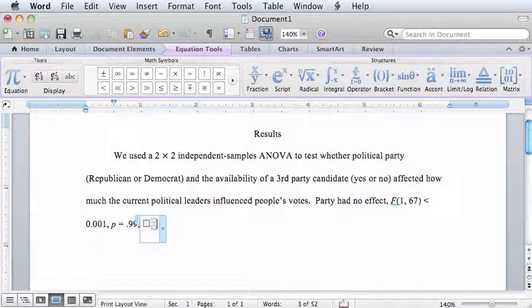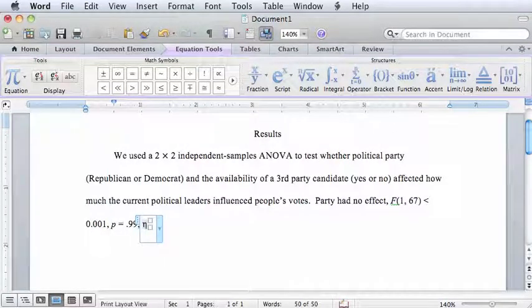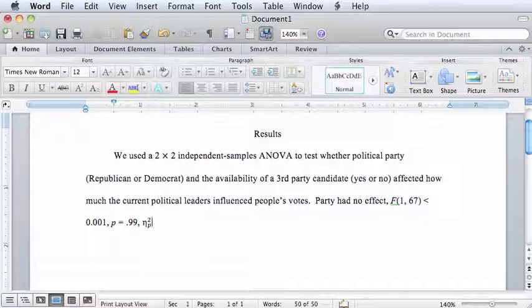Eta is a Greek letter that resembles a lower case n. It has a superscript 2 to indicate it is squared and a subscript p to indicate partial. To accomplish this, insert an equation.